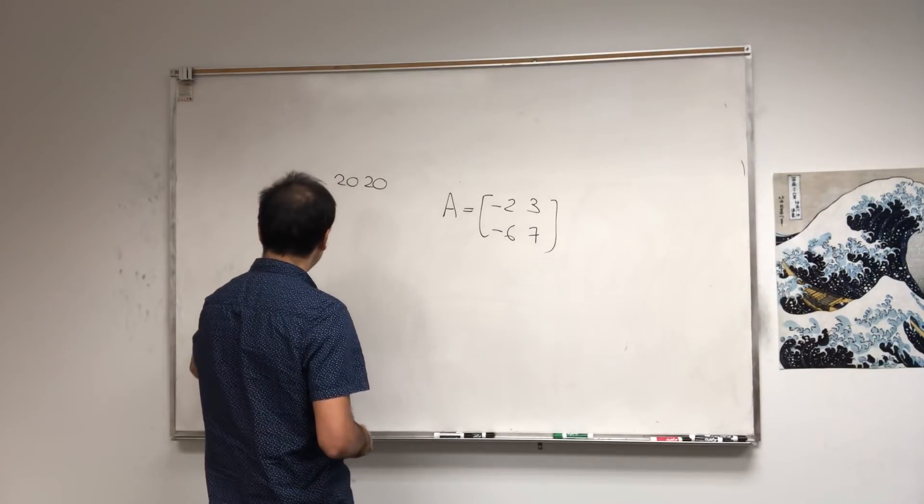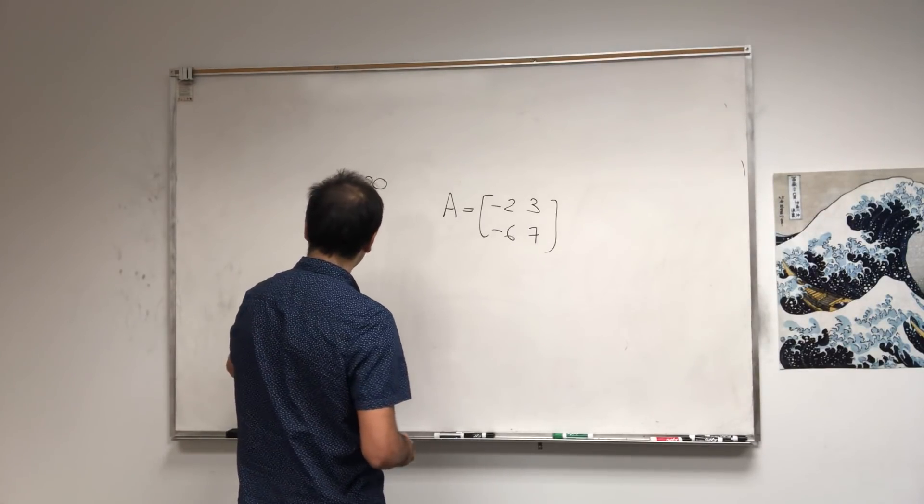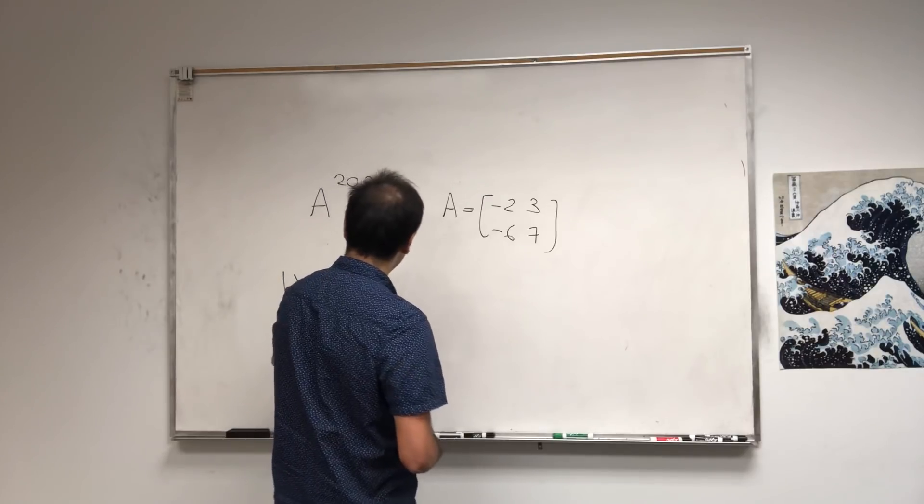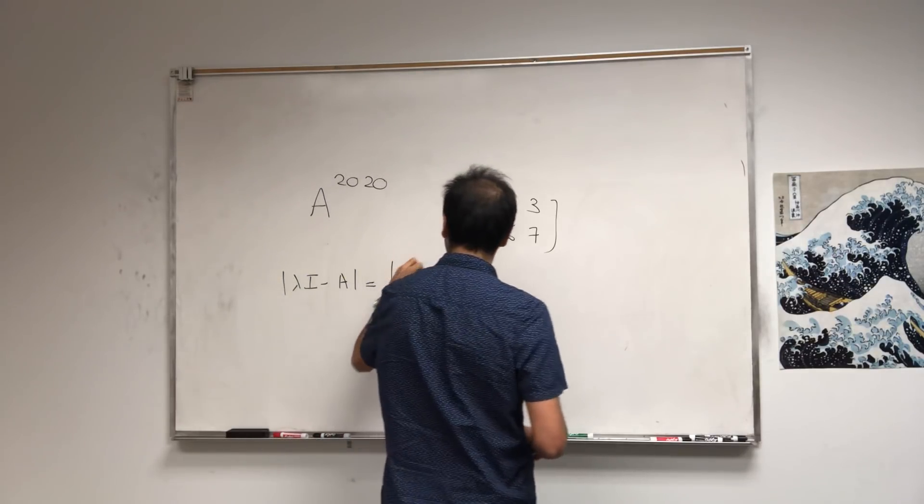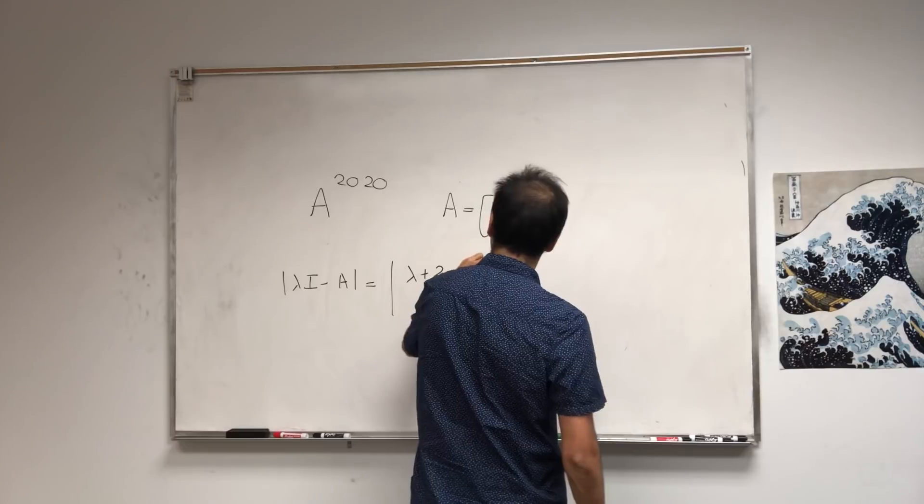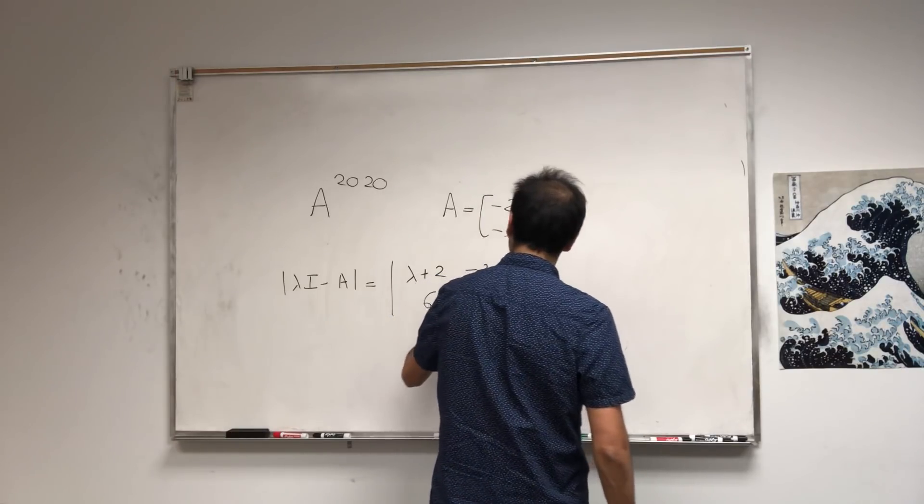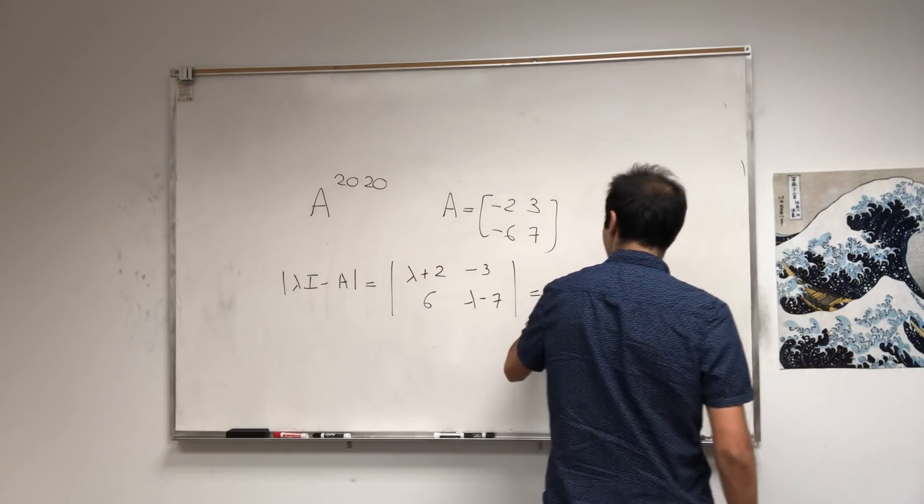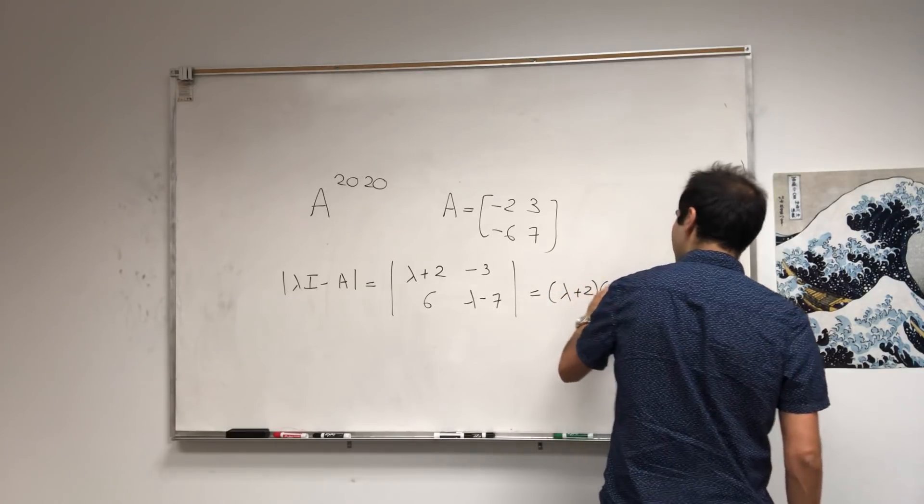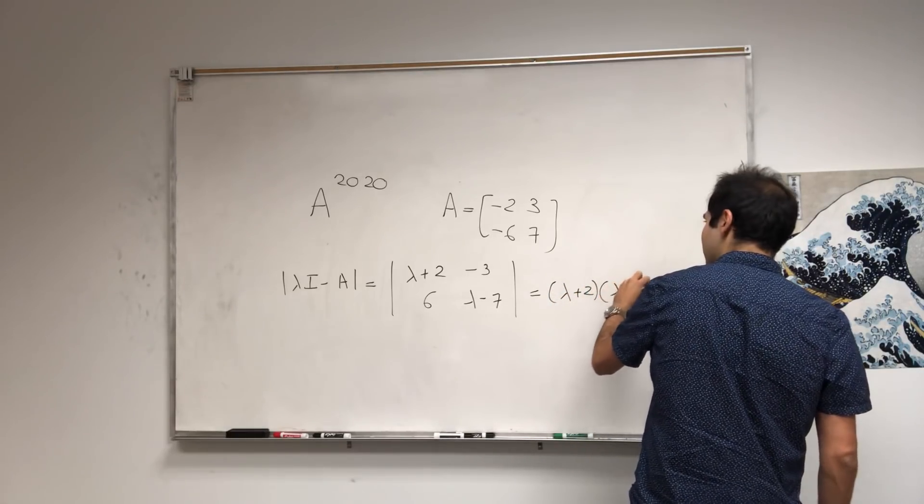Let's calculate the eigenvalues by finding the determinant of λI - A, which is the determinant of [λ+2, -3; 6, λ-7]. You multiply this out: (λ+2)(λ-7) + 18.